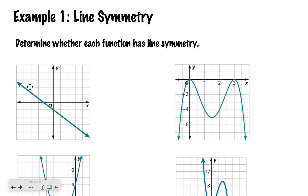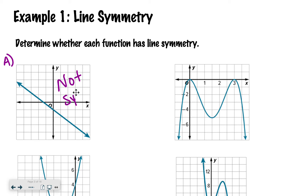If I look at this first graph — let's label it A — I don't really see a spot where I can draw a line and get the same thing on both sides. So this would not have symmetry. It's not symmetrical.